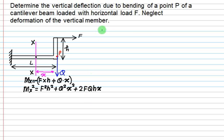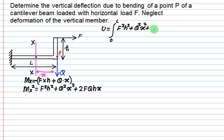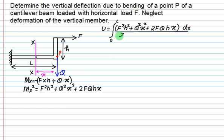The strain energy for bending is given by the integral from 0 to L of MX squared divided by 2EI times dX. MX squared expands to F squared times X squared, plus Q squared times X squared, plus 2 times F times Q times H times X, all multiplied by dX, divided by 2EI.